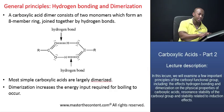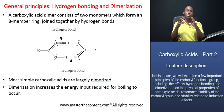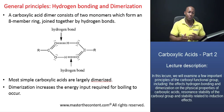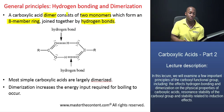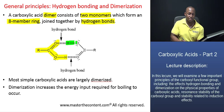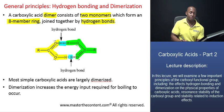What can actually happen in the case of a carboxylic acid is that two molecules of the acid can come together and hydrogen bond to form an eight-membered ring that is referred to as a dimer. And that's what we have on the screen right now. So a carboxylic acid dimer consists of two monomers — two contributing acid molecules — which form an eight-membered ring joined together by hydrogen bonds. As you can see, we have one acid here and another acid there.